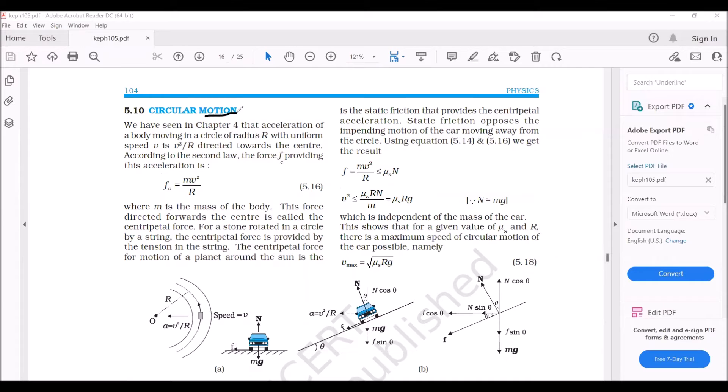Now we are considering circular motion. If we take an object which is moving in a circle, this circle radius is r and the object is moving with a speed v and its acceleration is v² by r.